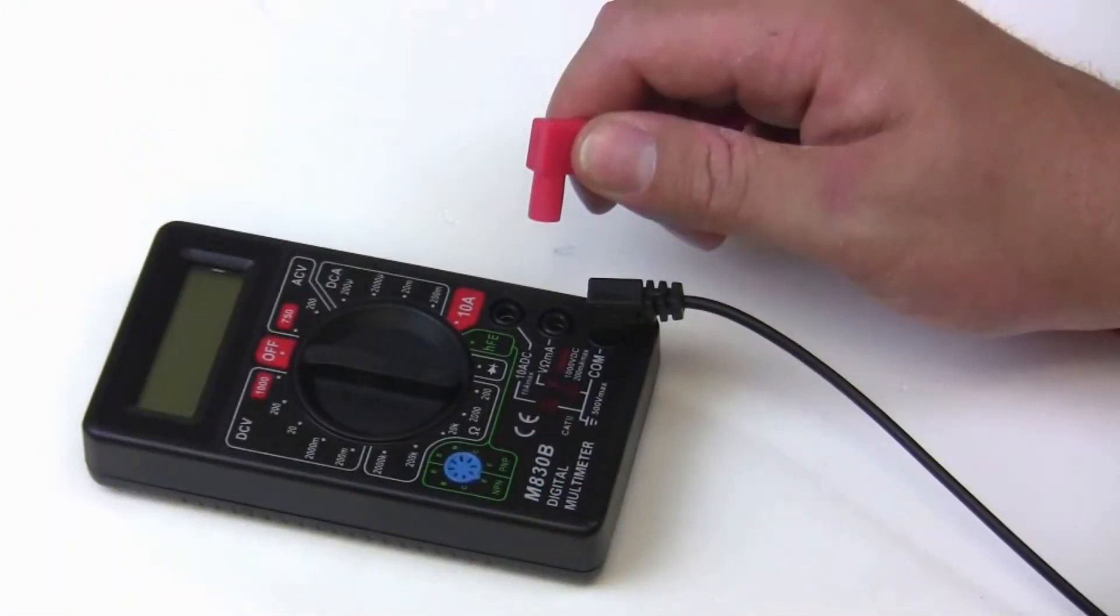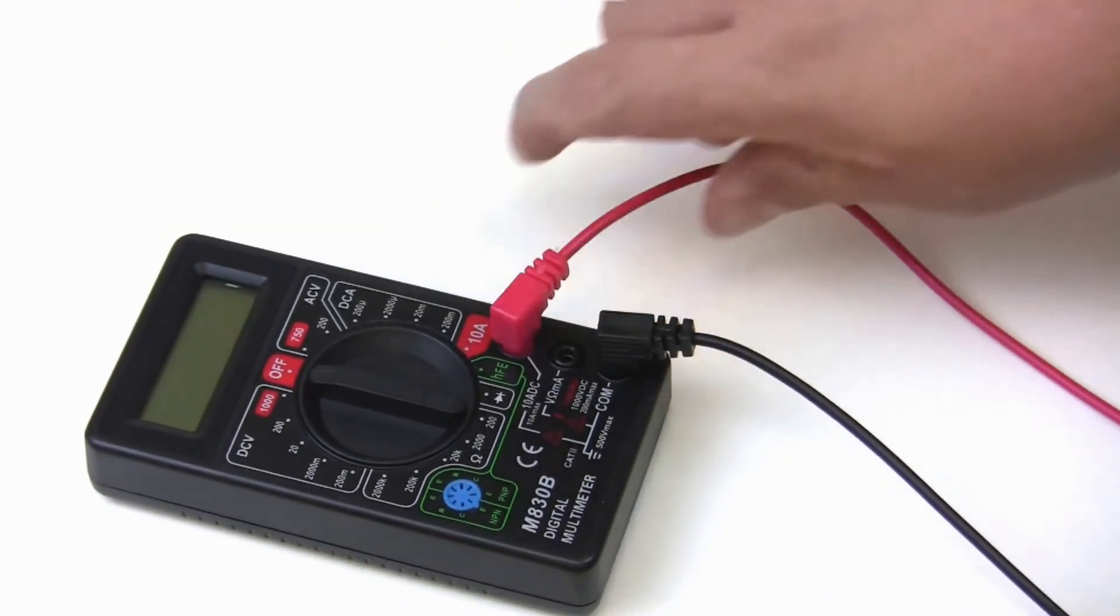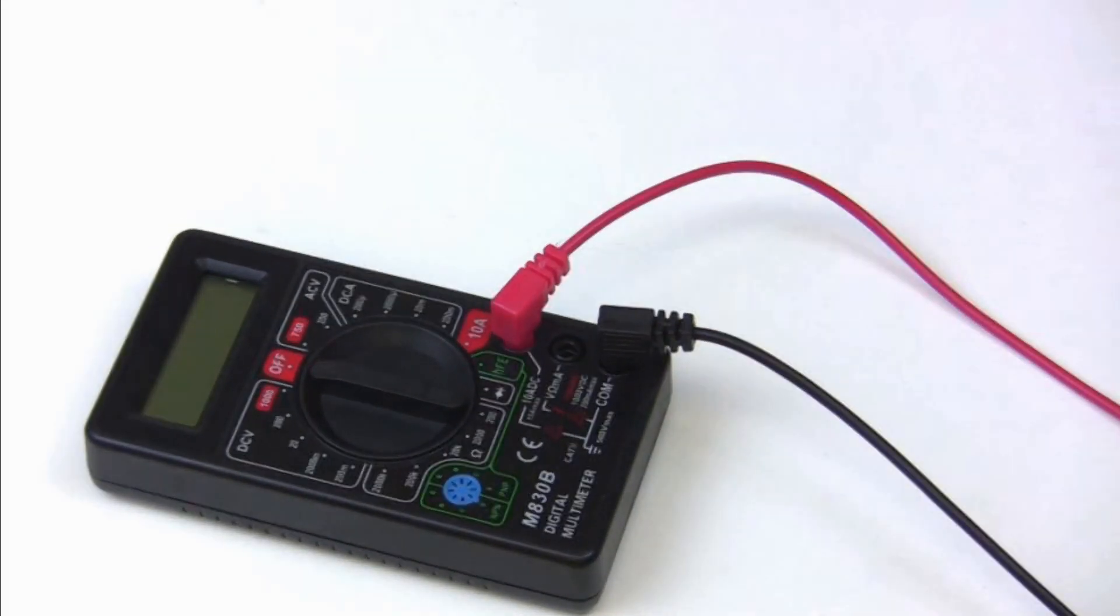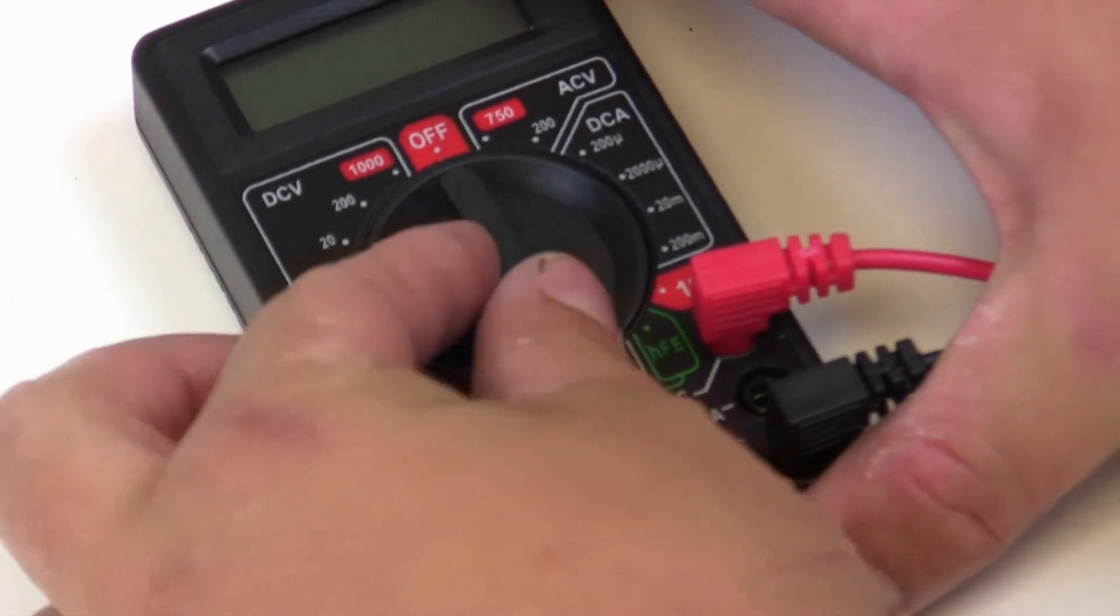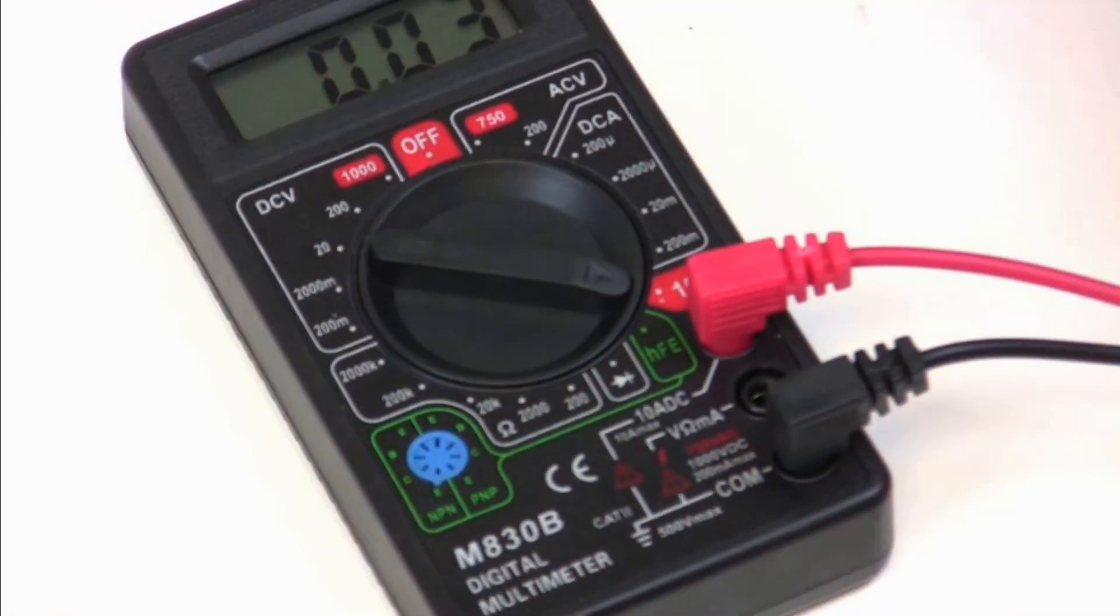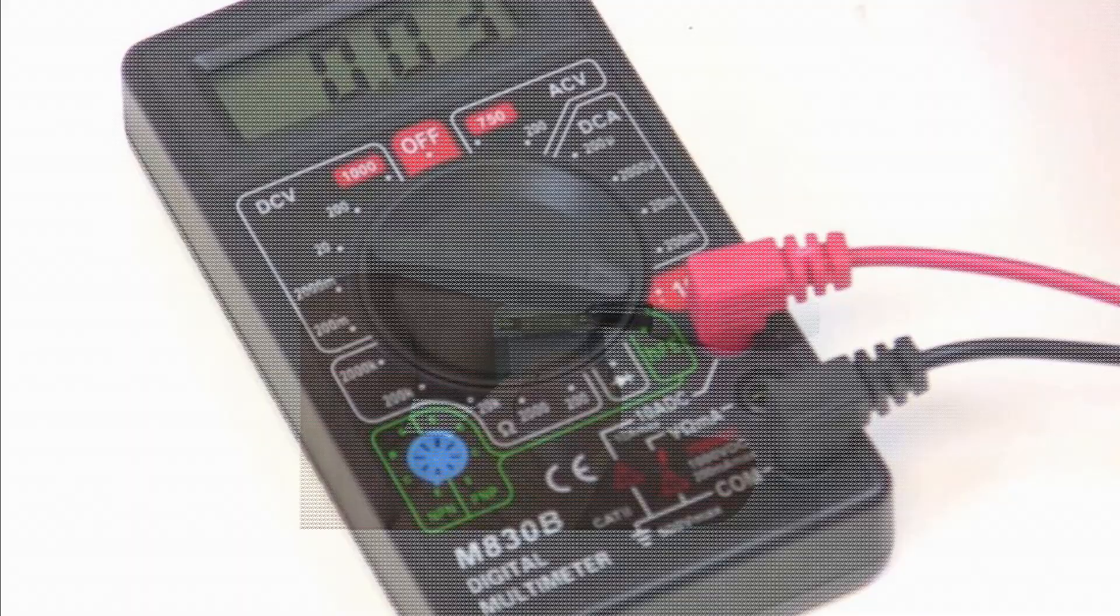For reading amperage between 0 and 10 amps, simply take your red lead and place it into the port marked 10 ADC. Set your multimeter to read 10 amps, now you're ready to measure amperage.